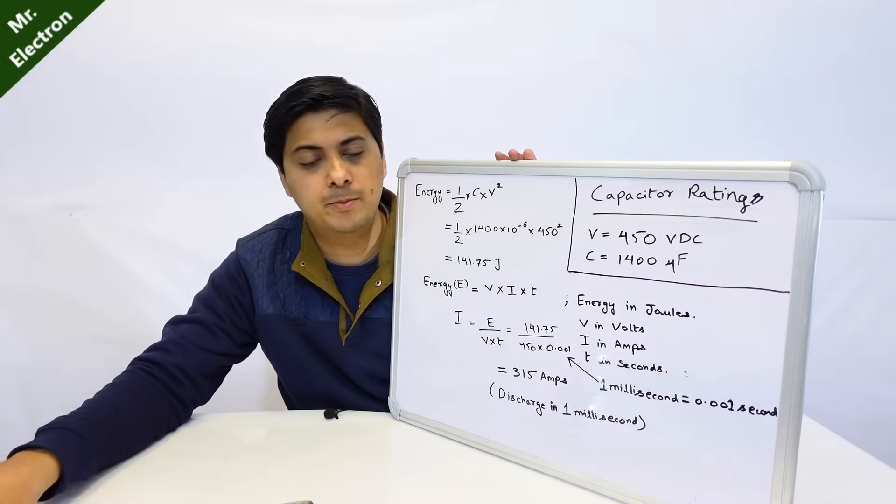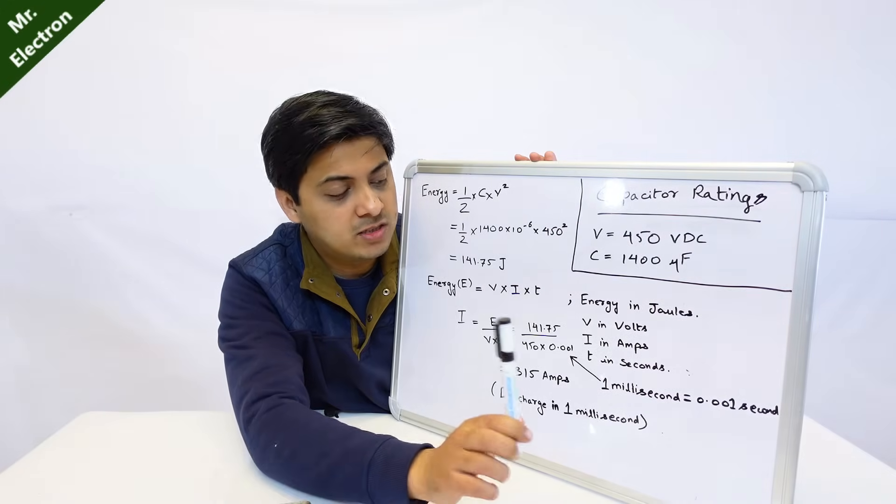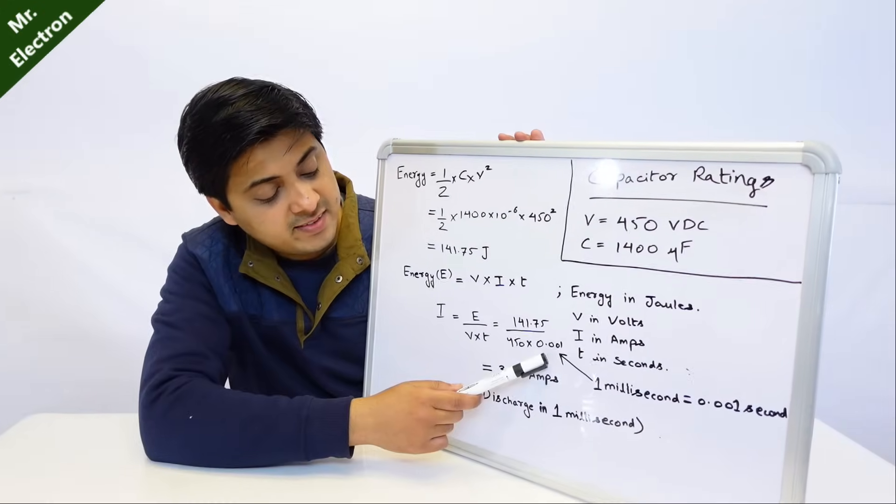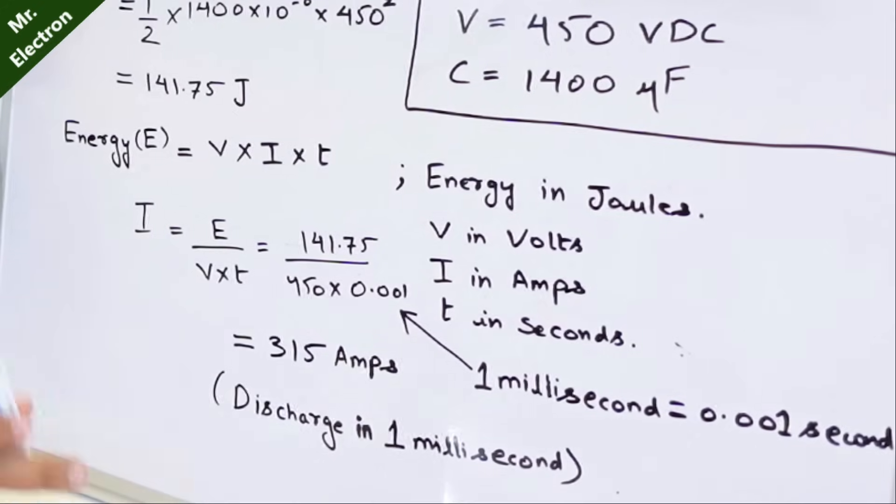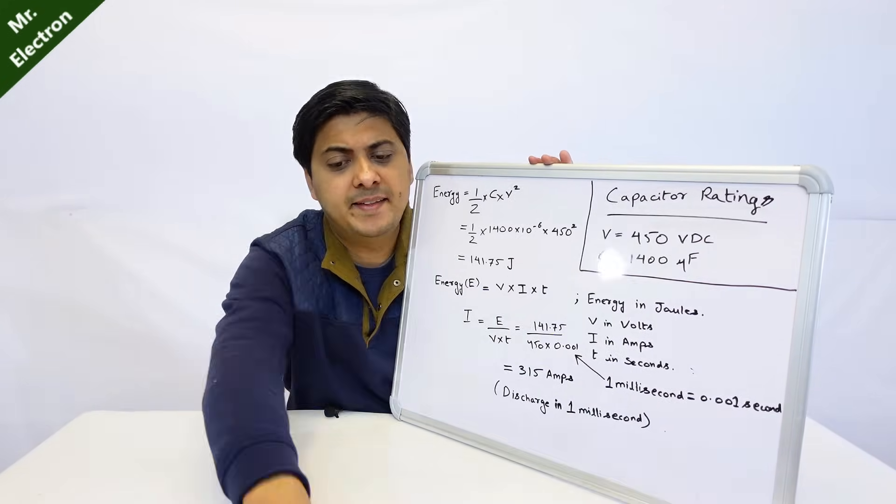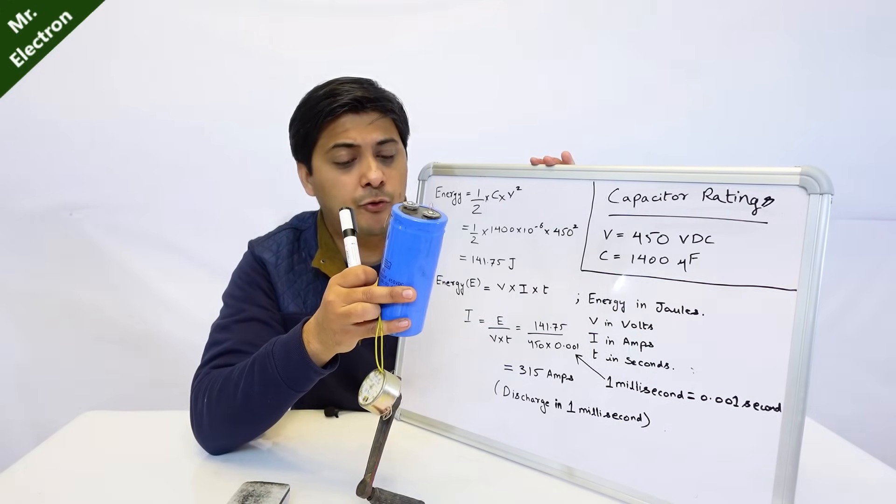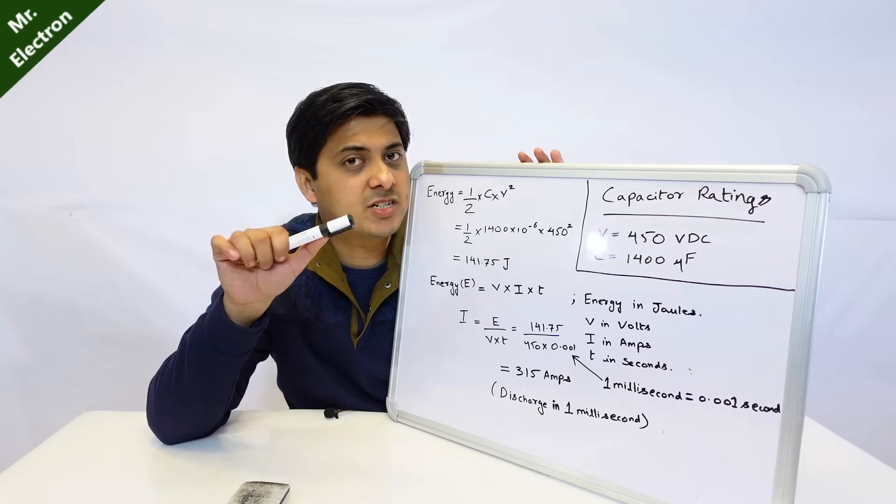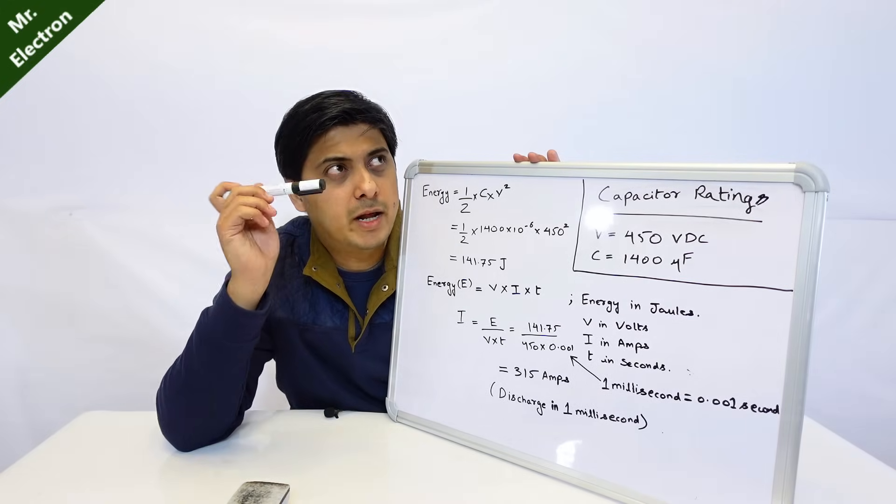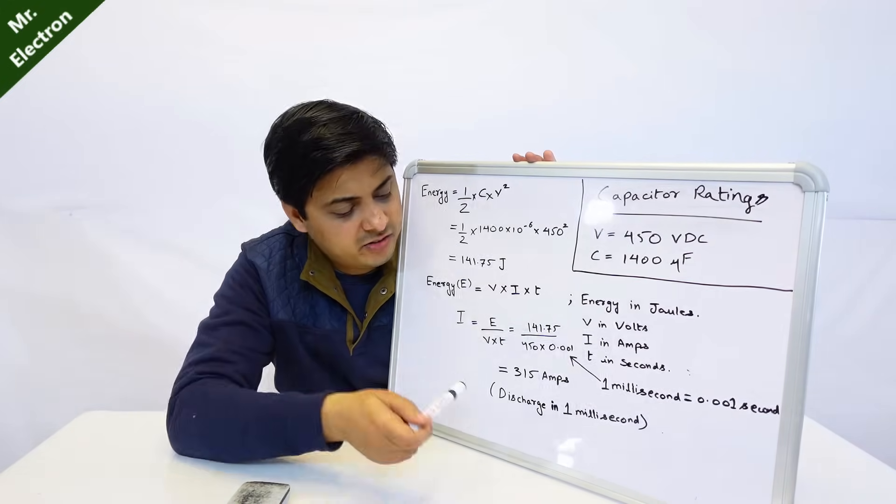If we have to take out I, I will be E by VT which is here. We put the values, E being 141.75 and V we already know 450 volts DC. Here I have taken one millisecond. When I did the short circuit with this rod it was in millisecond. The current discharges usually in milliseconds or even less than that, but I'm going to go with milliseconds. 1000 milliseconds equal one second, so here you can see one millisecond equals 0.001 seconds. Placing that value you will get a max peak of 315 amperes under short circuit which is a very high current.